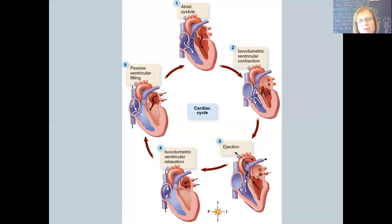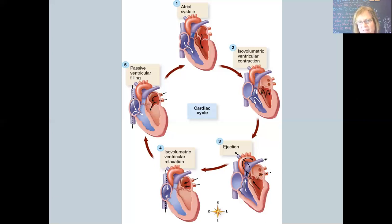The next phase is isovolumetric ventricular contraction. The ventricles are filling with blood and moving toward their own contraction. That blood is going to move through the valves separating the different components. We have our AV valves, which separate the right atrium and right ventricle, and the left atrium and left ventricle. Those AV valves close off when we're about to have ventricular contraction, preventing blood from flowing back up into the atria.